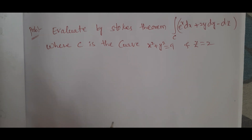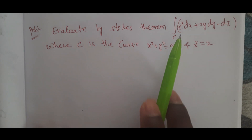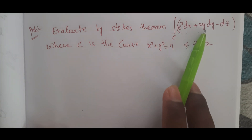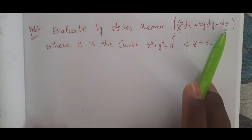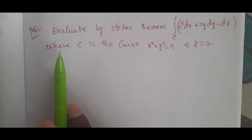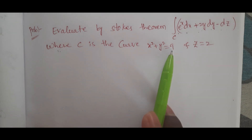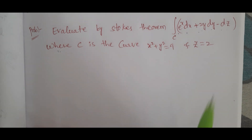Evaluate by Stokes theorem: integral c of e^x dx + 2y dy − dz, where c is the curve x² + y² = 9 and z = 2.